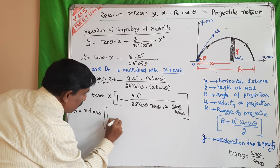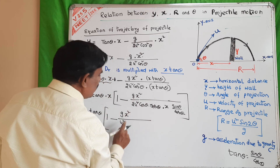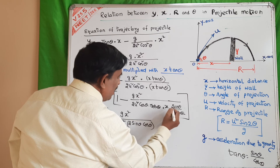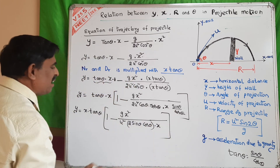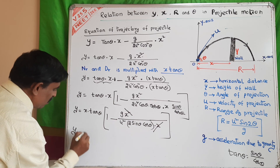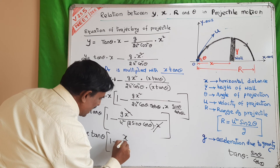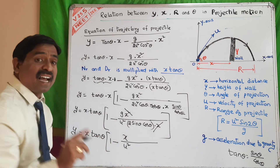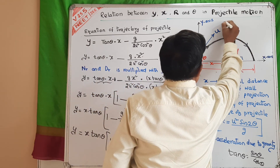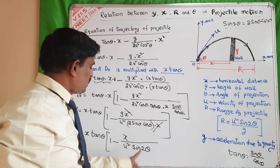So y is equal to x tan theta into 1 minus g x² by u² times 2 sin theta cos theta, with x cancelling x. Now, 2 sin theta cos theta equals sin 2 theta — in mathematics there is a formula: sin 2 theta is equal to 2 sin theta cos theta. So the expression becomes y equals x tan theta into 1 minus x divided by u² sin 2 theta by g.